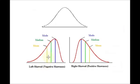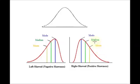A couple of points about the mean, the median and the mode. In a left skewed distribution, the mean is going to be to the left of the median, and in a right skewed distribution, the mean is going to be to the right of the median.